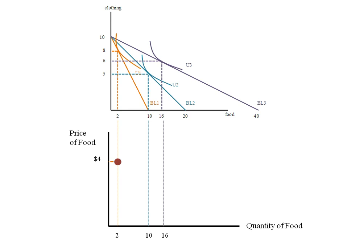Now when the price of food was four dollars, that's when we chose to buy two units of food. When the price of food was two dollars, we chose to buy 10 units. And when the price of food was one dollar, we chose to buy 16 units.